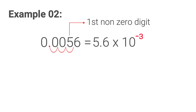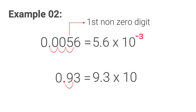Look here: zero point nine three. The first non-zero digit here is nine, so we bring the decimal point next to nine. Then it becomes nine point three. We came back passing only one digit, so the power becomes minus one, because we came back. Our answer becomes nine point three into ten to the power minus one.